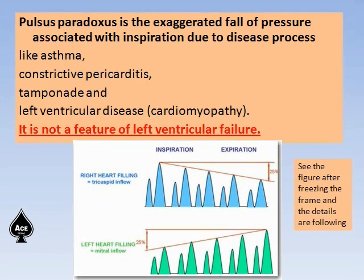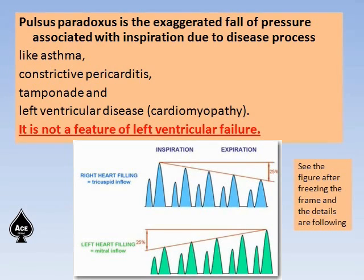Left ventricular failure produces mainly pulmonary edema and respiratory distress, tachycardia, tachypnea, and secondarily can lead to right heart failure, congestive cardiac failure, paroxysmal nocturnal dyspnea, and pulmonary edema. Crepitations at the bases of the lung, cough, and blood-tinged sputum may occur depending on whether it is chronic or acute left ventricular failure. The picture shows changes in blood pressure, right ventricular filling, right heart filling, and left heart filling. Since systemic blood pressure is decided by left heart filling, please freeze the picture, understand it, and then I will discuss the explanation.